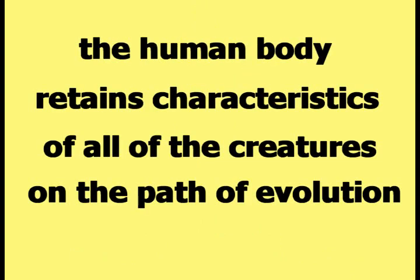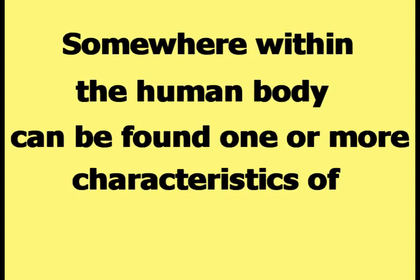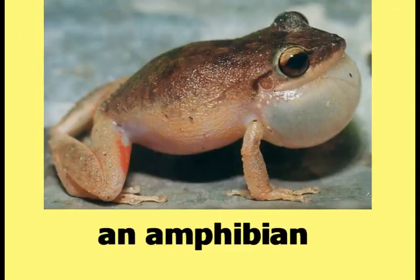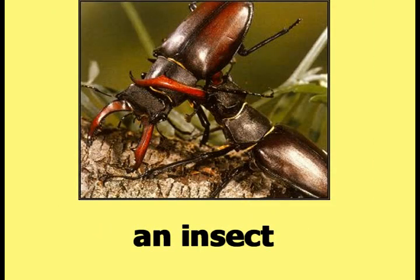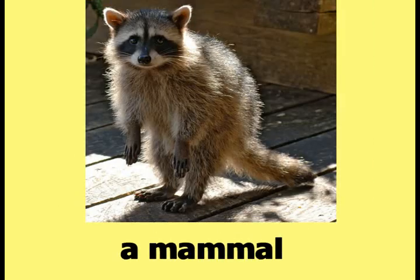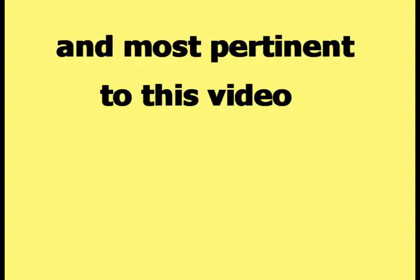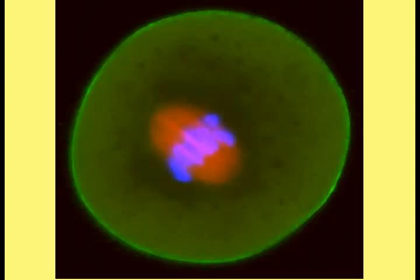According to Happy Theory, the human body retains characteristics of all of the creatures on the path of evolution somewhere within itself. Somewhere within the human body can be found one or more characteristics of a fish, an amphibian, a reptile, an insect, a bird, a mammal, and most pertinent to this video, the original single cell floating in the ocean.